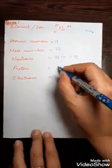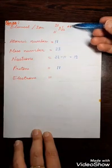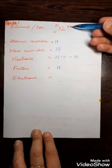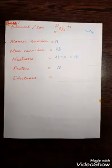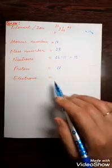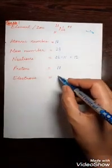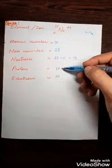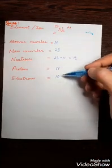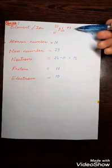Protons equal the atomic number, so there are 11 protons. There is a single positive charge on the sodium ion, which means there is one fewer electron. So electrons become 10 — because the positive charge means there is one unit more positive charge than electrons.